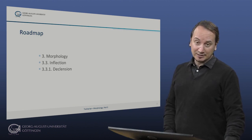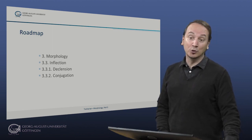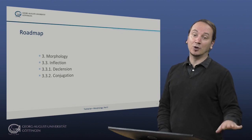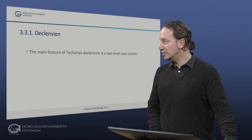We'll deal with Tocharian declension and nominal classes, and then also have a brief look at the conjugation and the verbal classes of Tocharian. So let's start here.